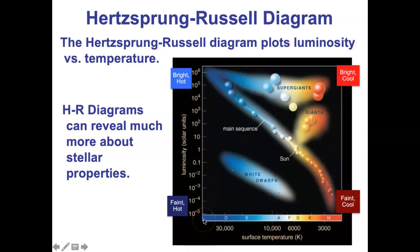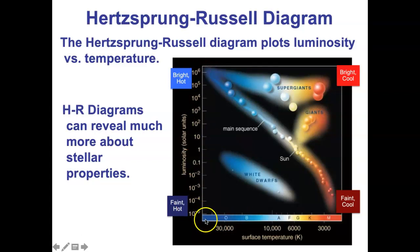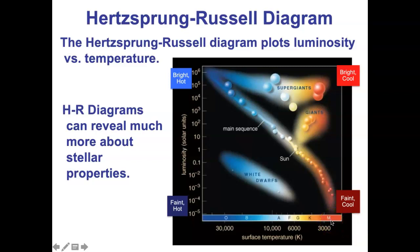HR diagrams are always laid out the same way. It's a scatter plot with luminosity on the vertical axis — faint stars on the bottom and bright stars on the top — and then temperature is always on the horizontal axis. But it's a little backwards, somewhat for historical reasons, with hot blue stars on the left side, going down to the coolest reddest stars on the right side.